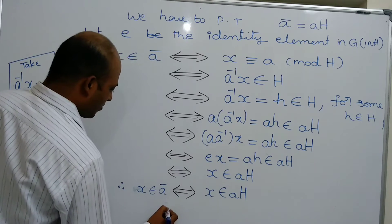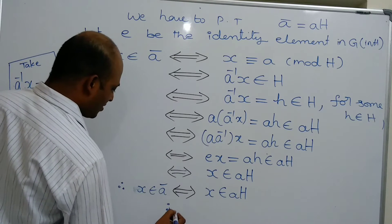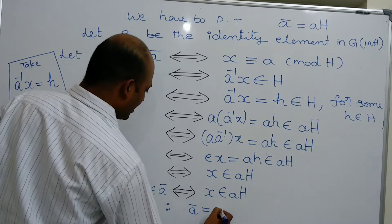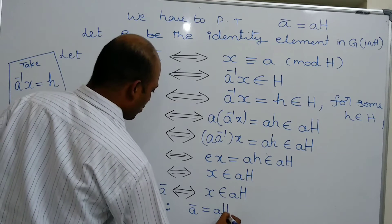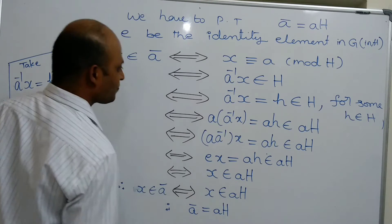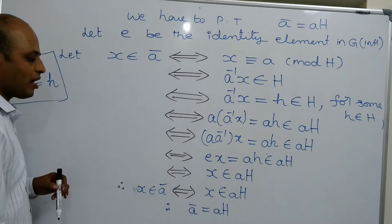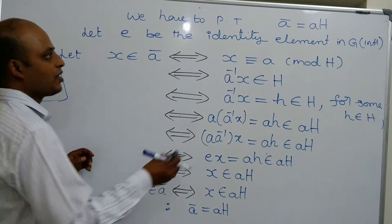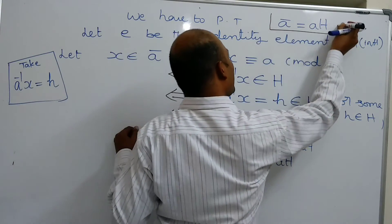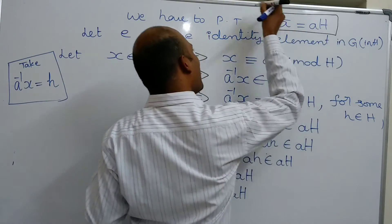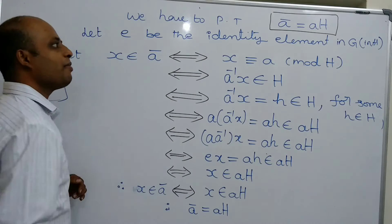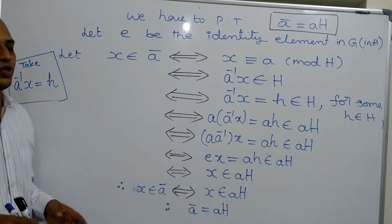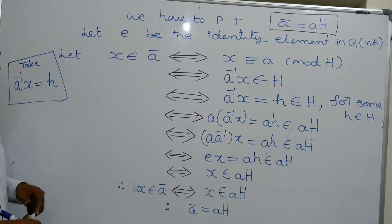This concludes that a bar equals the left coset aH. Our aim was to prove that a bar equals aH, and this is now established.